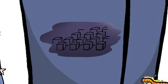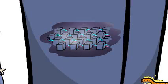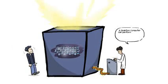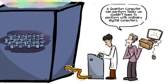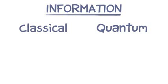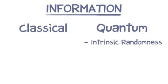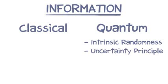If you have a quantum system, quantum computers can do things, can perform tasks that we couldn't hope to perform with ordinary digital computers. You can't dream of doing it. So when we think about how quantum information is different from classical information nowadays, we're thinking about this intrinsic randomness, the uncertainty principle, and also about entanglement.